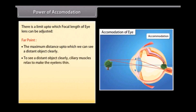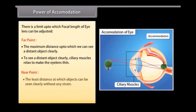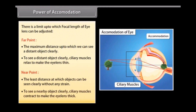To see a distant object clearly, ciliary muscles relax to make the lens thin. The near point is the least distance at which objects can be seen clearly without any strain. To see a nearby object clearly, ciliary muscles contract to make the lens thick.